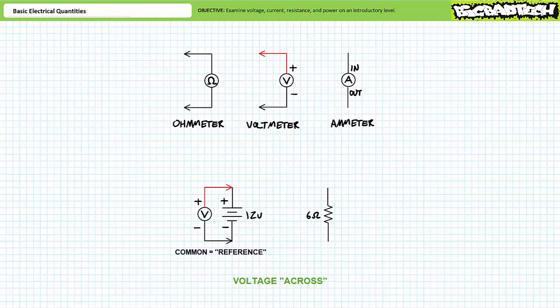The point being, regardless of voltmeter orientation, the magnitude of difference is the same, in both cases 12 volts. However, only the reference position has been shifted.